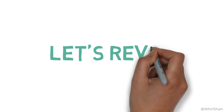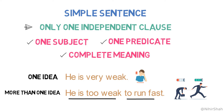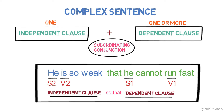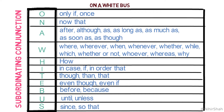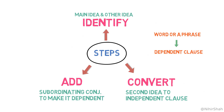That's all in this video. Let's quickly revise what we learned in this lesson. First, we looked into the formation of simple and complex sentences. A simple sentence is made of one independent clause and it conveys one or more thoughts. A complex sentence is made of one independent clause and one or more dependent clauses, joined with a subordinating conjunction. This is the list of subordinating conjunctions, and to remember this list, remember the phrase 'on a white bus.' Next, we learned the three steps: one, identify the main idea and other ideas; two, convert the second idea into an independent clause; three, add an appropriate subordinating conjunction to make it a dependent clause and form the sentence with necessary changes.